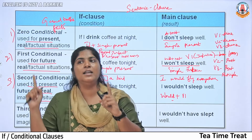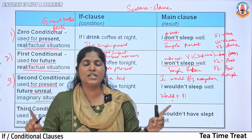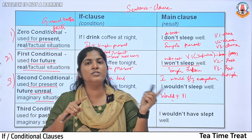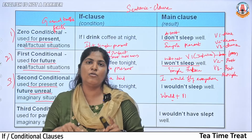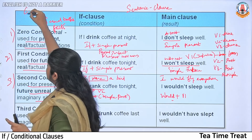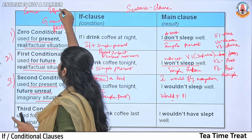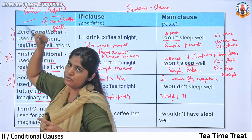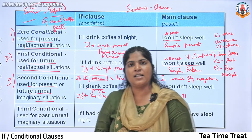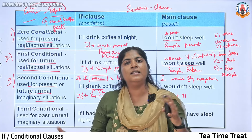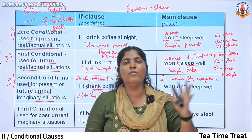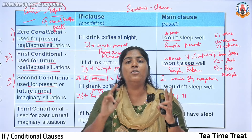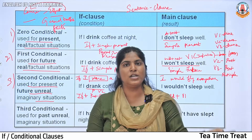So, to recap: zero conditional uses simple present in both clauses — for general truths and facts. First conditional is used for real or likely future situations. Second conditional uses simple past in the if-clause and would + V1 in the main clause — for present or future imaginary situations.